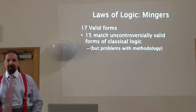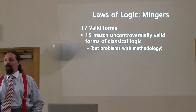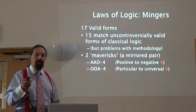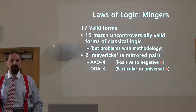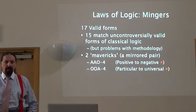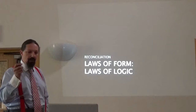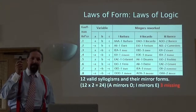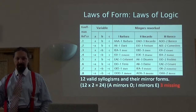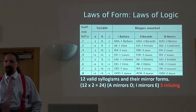Mingus found 17 valid forms — 15 match uncontroversially valid forms of classical logic, but there are two mavericks, two outliers, and there are problems with his methodology. You can immediately tell those mavericks don't work if you know the rules of classical logic: you can't have two positive propositions leading to a negative conclusion, and you can't have two particular propositions leading to a universal positive conclusion. The good news is we can reconcile Spencer Brown's work with laws of logic. If we keep the signs of negation and the signs of distribution — I'm deliberately changing my reference from 'implication' to 'distribution' — we come out with 12 valid syllogistic forms and their mirror forms.